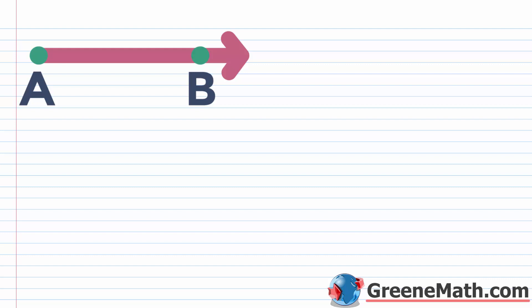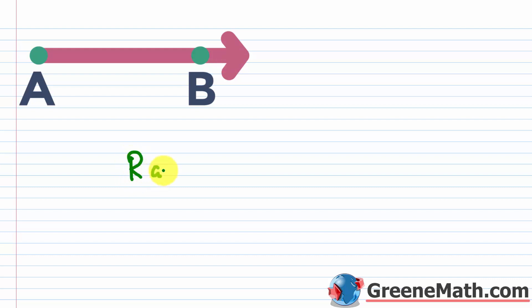Lastly, we're going to talk about the concept of a ray. A ray has one endpoint — in this case, A — and it extends through point B indefinitely. The arrow tells us it starts at A and continues through B indefinitely. This is ray AB, written as AB with an arrow on top.